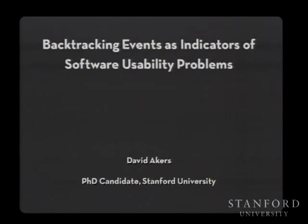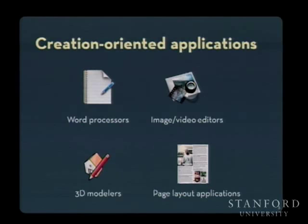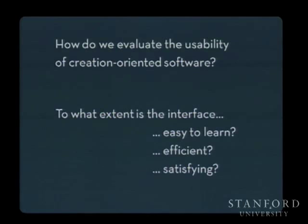Word processors, image and video editors, 3D modelers, and page layout applications — what do all these have in common? They're all what I'll term 'creation-oriented software,' where the central goal is the authoring of some content. How do we evaluate the usability of this kind of software? Is it easy to learn? Is it efficient? Is it satisfying? Any one of these goals could be most important depending on the product.